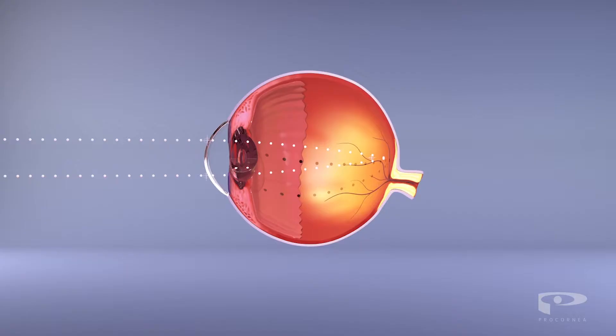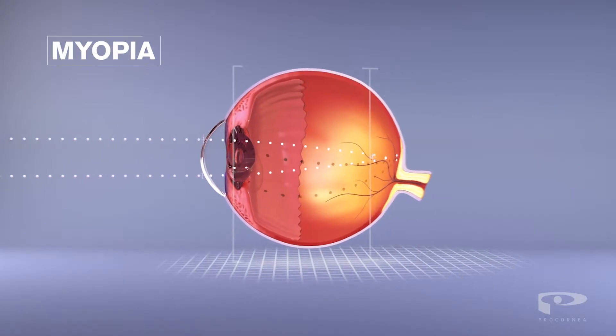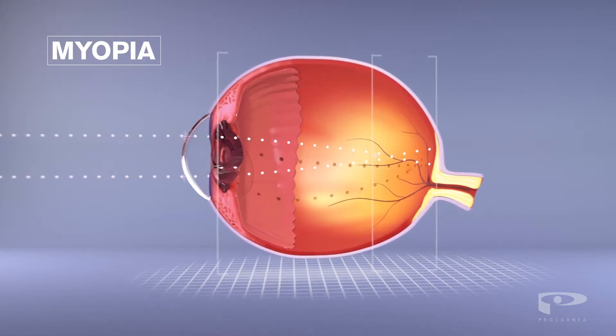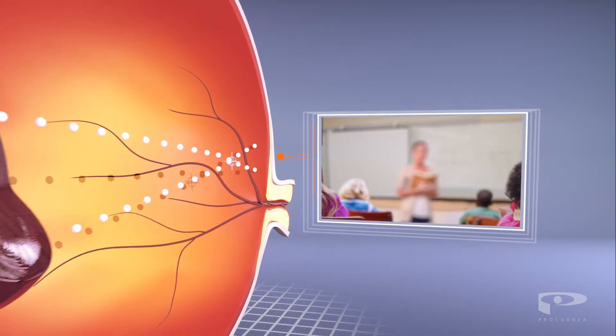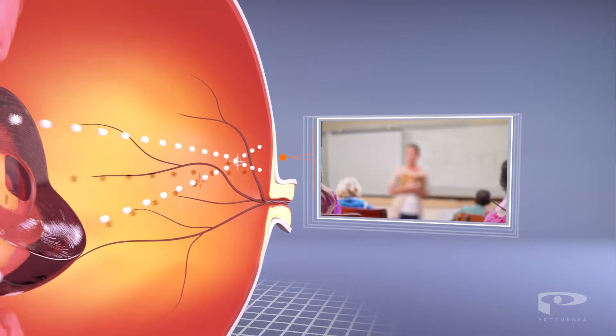In the case of myopia, or nearsightedness, the eye grows too long. Light then focuses in front of the retina, after which it disperses, causing distance vision to become blurred.